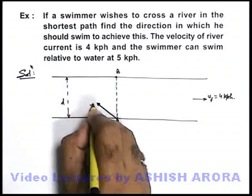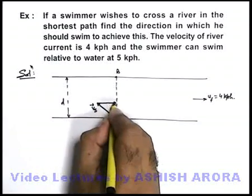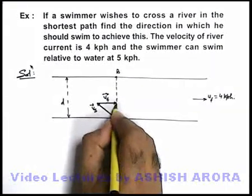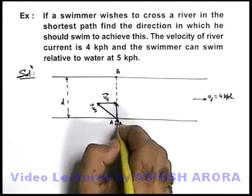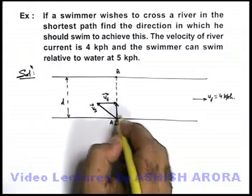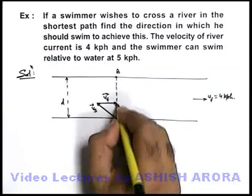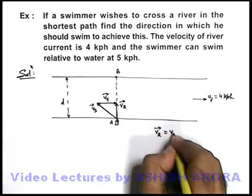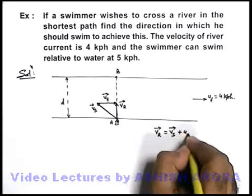With the velocity v_s, such that after adding the velocity u_f, his net velocity with respect to ground should become along the width of the river or perpendicular to the direction of current. This should be the resultant velocity or net velocity which can be given as v_s plus u_f.